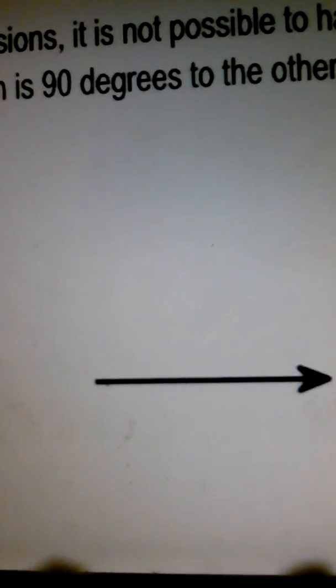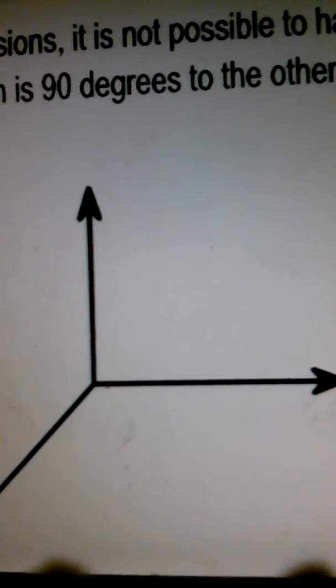You're watching this on a flat two-dimensional computer monitor. In two dimensions, it's not possible to have three axes, each of which is 90 degrees to the other two.